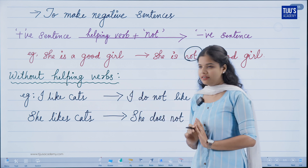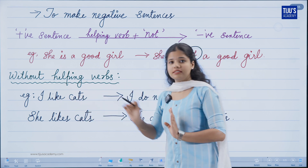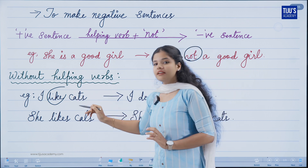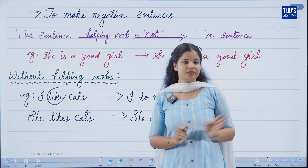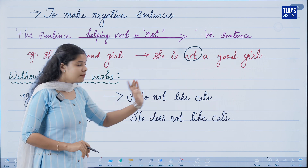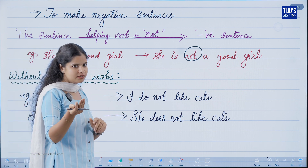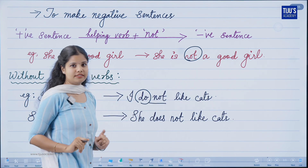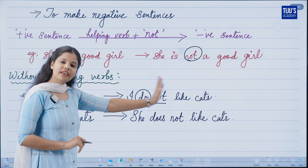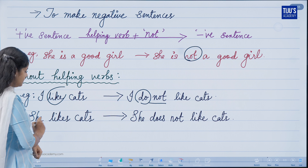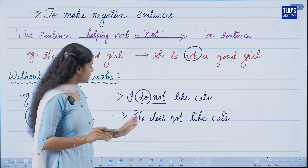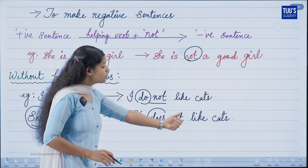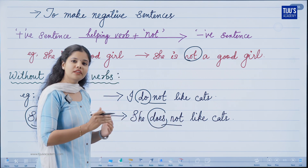Without helping verbs in the sentence, let's take an example: 'I like cats.' To make this negative, we add the helping verb do with not: 'I do not like cats.' Similarly, 'she likes cats' — since she is singular, we use does: 'she does not like cats.' When we use does not, we remove the S from the main verb.